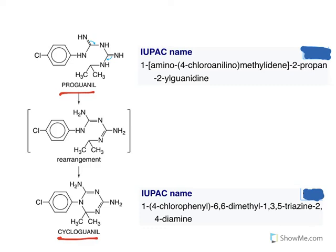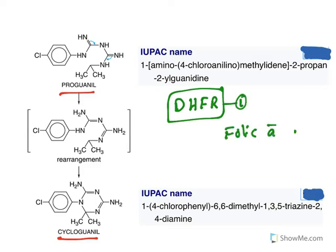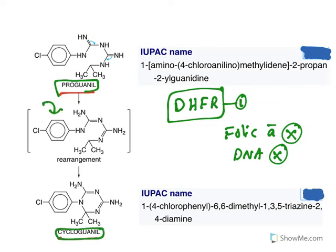The mechanism of action of proguanil and cycloguanil is that they inhibit dihydrofolate reductase of plasmodium. By inhibiting this enzyme, folic acid synthesis is inhibited; if folic acid synthesis is inhibited, DNA is not synthesized and plasmodium cannot multiply. Proguanil is a prodrug that is rearranged (cyclized) to form cycloguanil, which is the active drug.